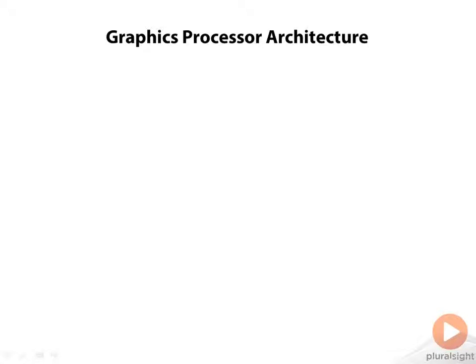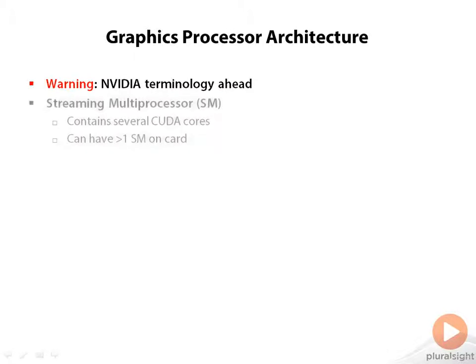Let's talk about the architecture of GPUs. Before we begin, I have to issue a warning that the terminology of this whole course relates to NVIDIA devices. ATI uses a slightly different terminology. Throughout this course, I'm going to avoid any sort of comparisons between ATI and NVIDIA. There are cases when ATI cards have an advantage — for example, if you're thinking of doing something like Bitcoin mining.